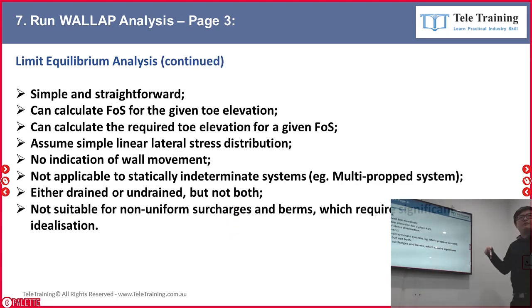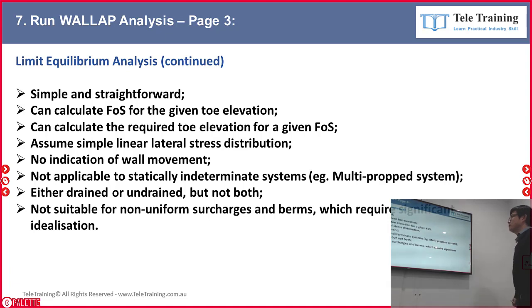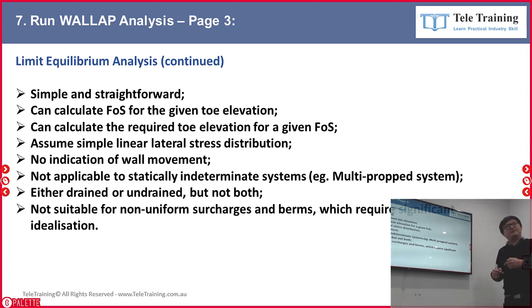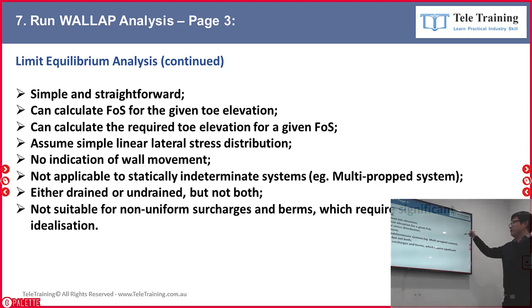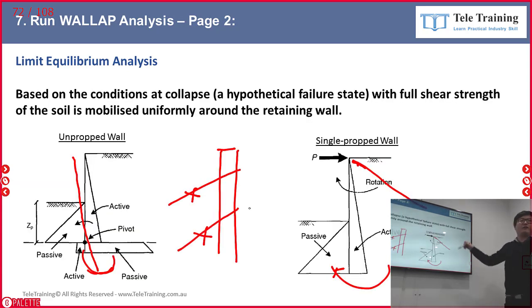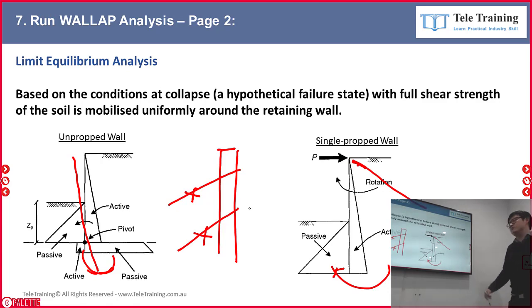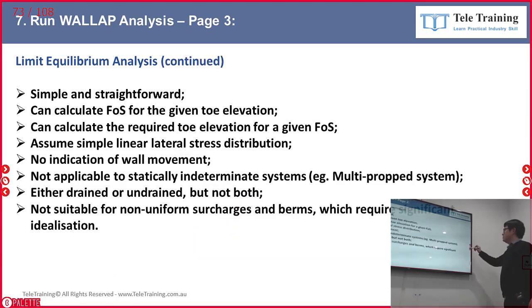The limit equilibrium analysis is simple and straightforward because it always assumes that KA and KP conditions have been reached. KA and KP are not always reached when you have multiple anchors or struts restraining movement and preventing sufficient displacement. But when you have no anchor or only one anchor, you still have room to move, so it simply assumes KA and KP — which is straightforward.